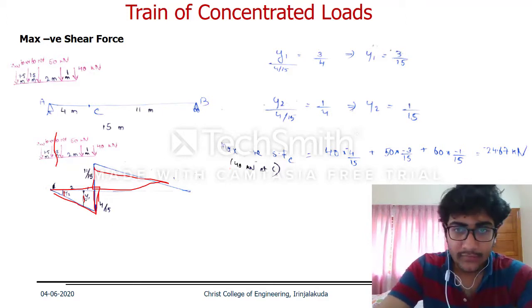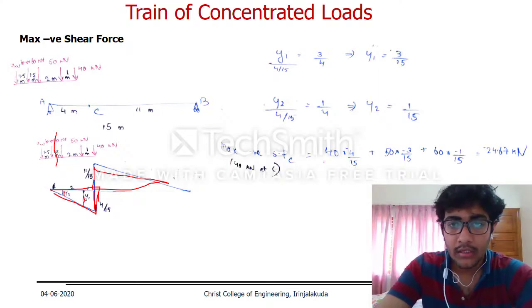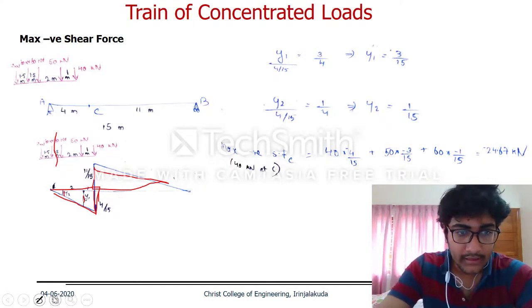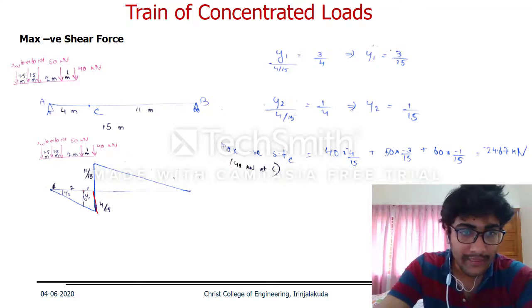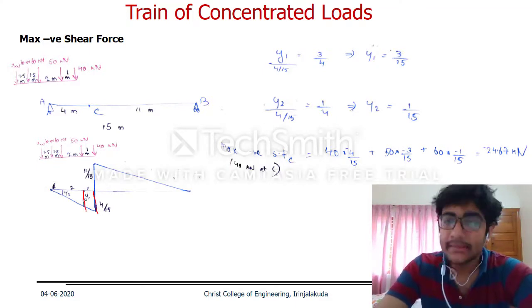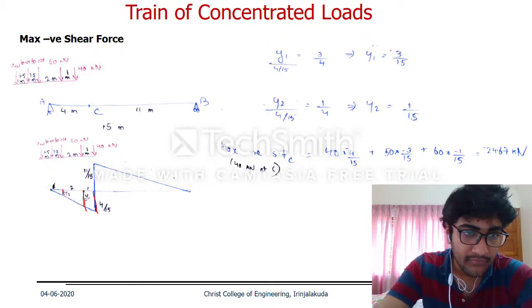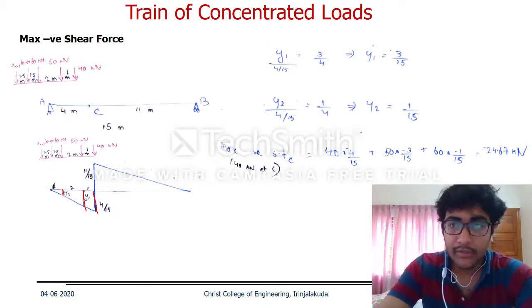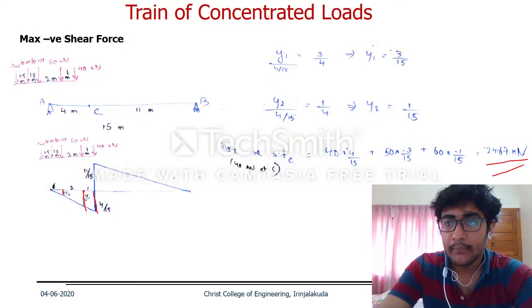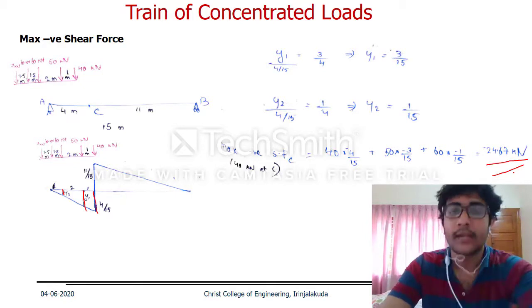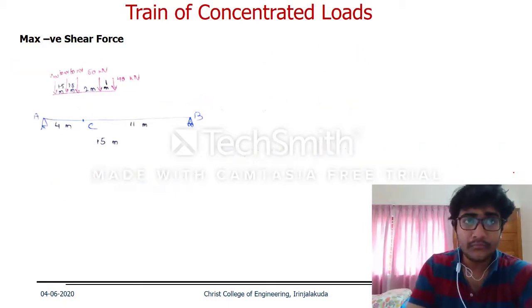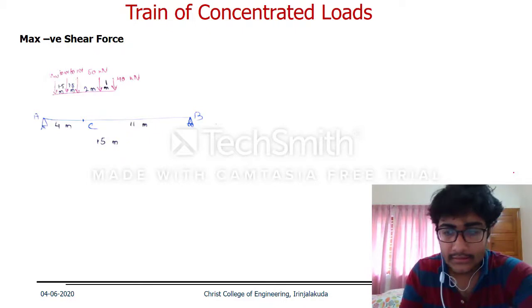The maximum negative shear force at C when the 40 kN load is at C equals: 40 times 4/15 minus 50 times 3/15 minus 60 times 1/15. The total value will be minus 24.67 kN.